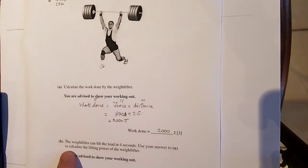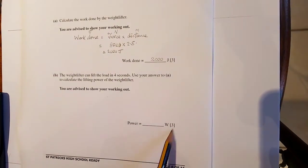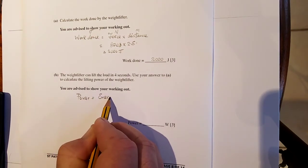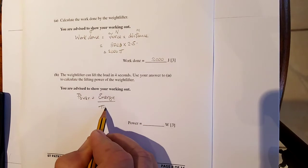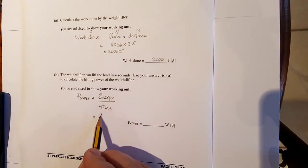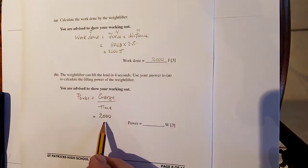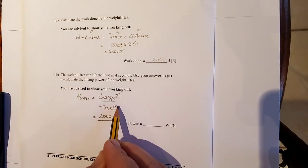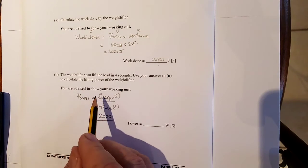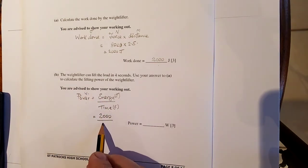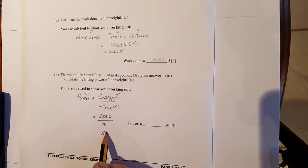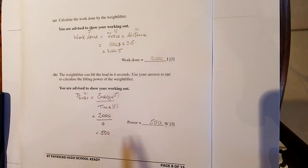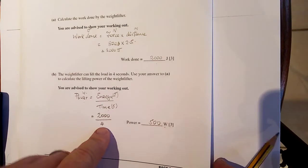Now the weightlifter can lift the load in 4 seconds. Use your answer up here to calculate the power. Again, what am I looking for? I'm looking for three marks here. Power equals energy over time. What's the energy? 2,000. 2,000 over the time, 4 seconds. Energy is measured in joules. Time is measured in seconds. What is the unit of power? 2,000 over 4 is equal to 500 watts, but I've already given me that so I don't have to give the mark for that. One, two, there's my three marks.